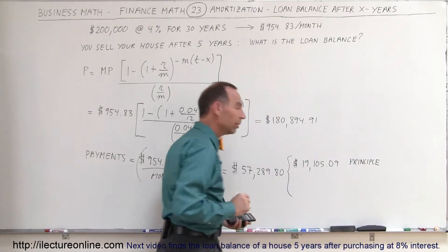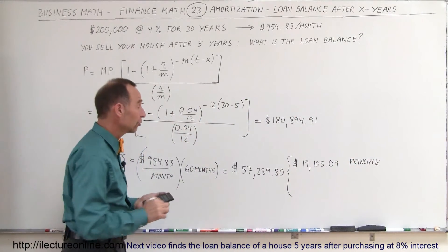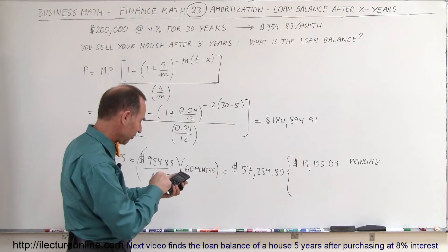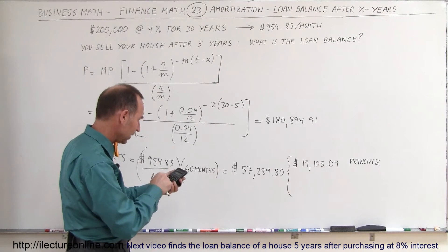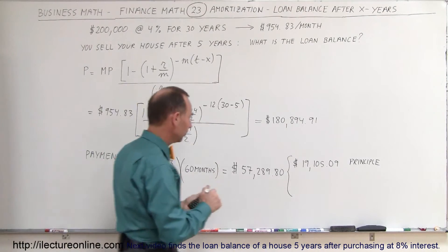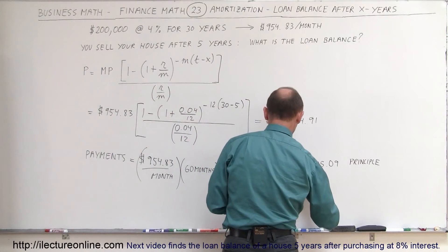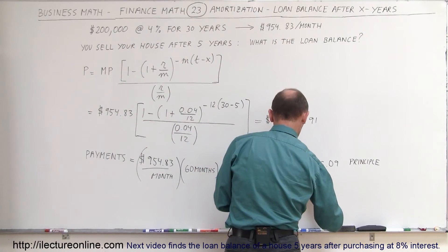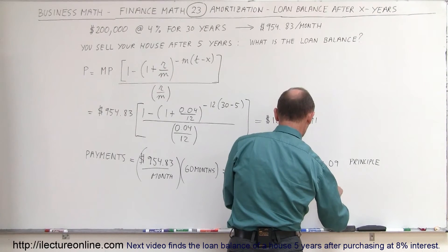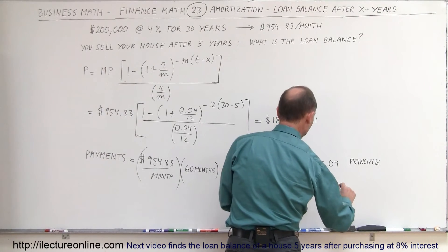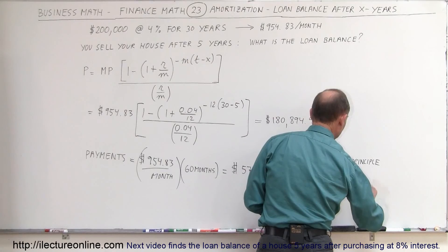And the remainder then went to paying the bank in interest. So then you take that amount and subtract that from $57,289.80. And you can see that of that amount paid so far, $38,184.71 went to paying interest.